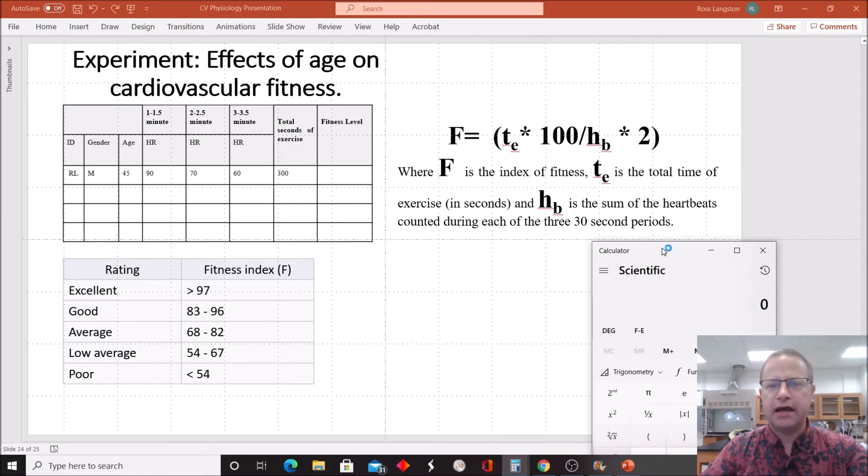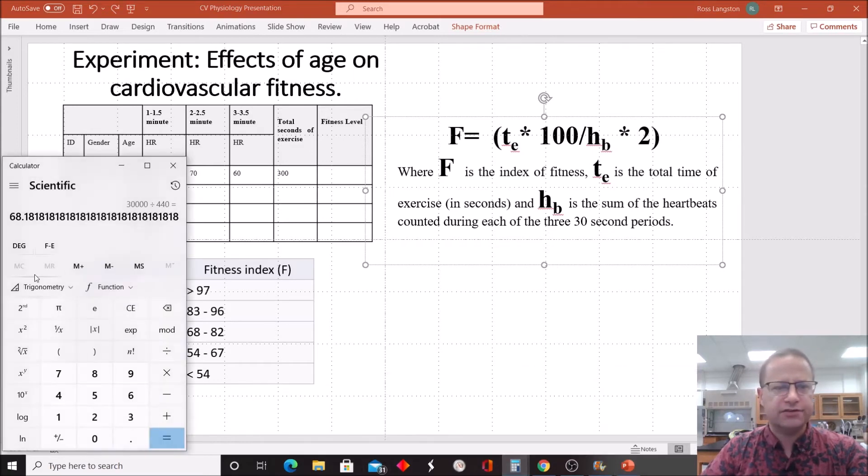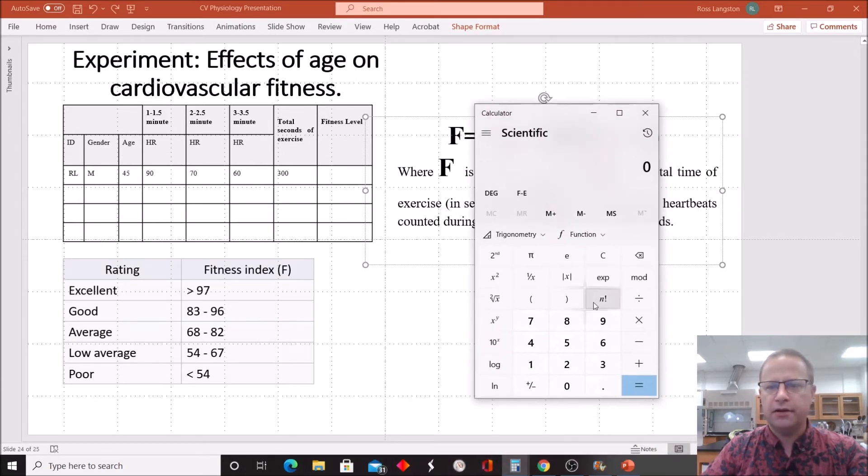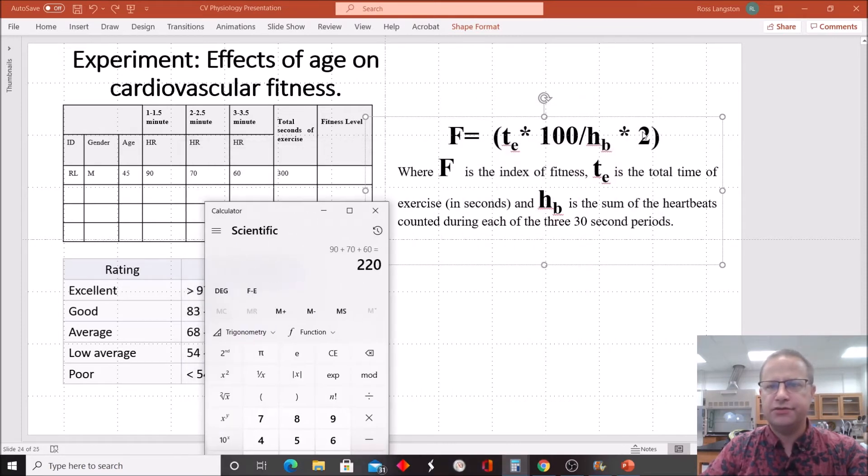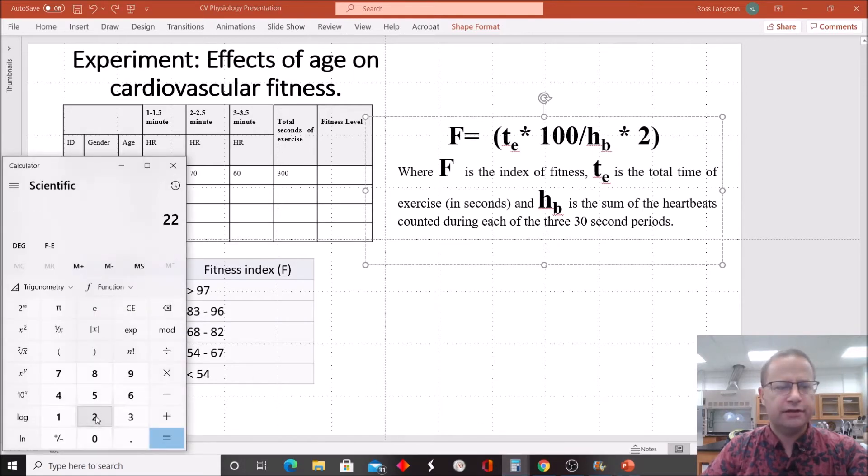So let's clear that out. Now let's take a look at our denominator. So the denominator is the sum of the heartbeats, and then we're going to multiply that times 2. So let's find out the sum of the heartbeats first. So, whoops, I've got so many calculators open. All right, so first off, we said that our first heartbeats was 90, and our second heart rate was 70, and our third was 60. Okay, that should come out to be 220. Now, if we multiply that by 2, as the equation requires, we're going to get 220 times 2 equals 440.